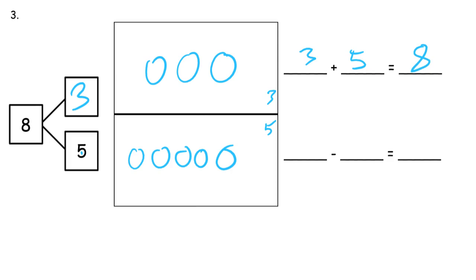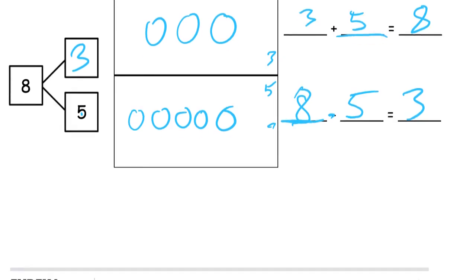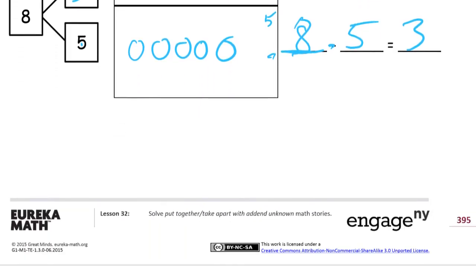And if we start with all eight and take away five, the other part has to be three. So eight minus five equals three. The first number sentence takes the two parts and puts them together to make eight — that's addition. Then with subtraction, we take the eight apart into the five and the three.